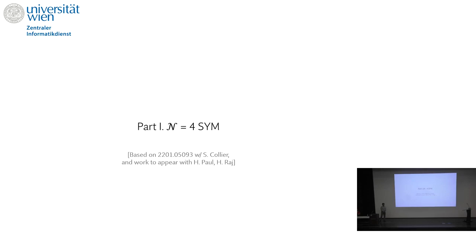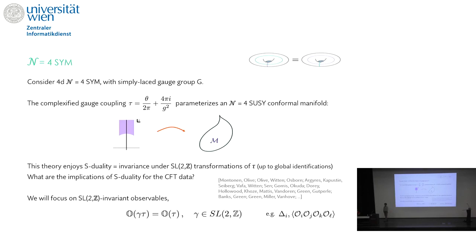First, the N=4 segment. This is based on a paper from January written with Scott Collier and some work to appear with Hynek Paul and Himanshu Raj. To get to the statement about averaging and large N, we need to take a route through some field theory techniques developed to understand S-duality. We consider 4D N=4 with simply-laced gauge group G and an exactly marginal coupling τ, whose observables map from the upper half plane into the conformal manifold parametrized by τ.